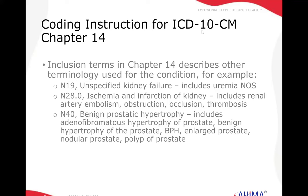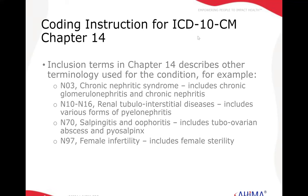N40, benign prostatic hypertrophy, includes such terms as benign hypertrophy of the prostate. And here we have nephritic syndrome, which includes chronic glomerular nephritis and chronic nephritis. Be clear on what is nephritic syndrome versus nephrotic syndrome — they are two entirely different things with two entirely different codes.